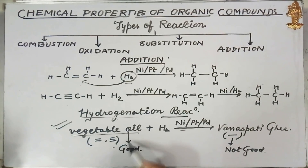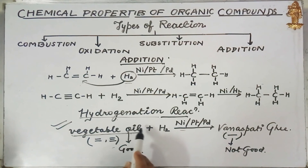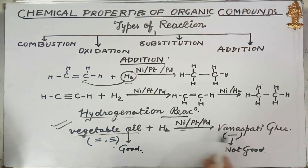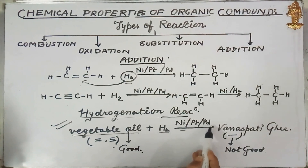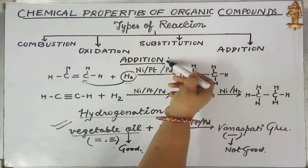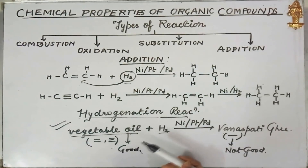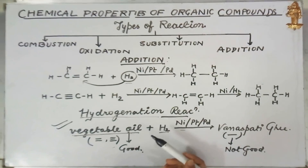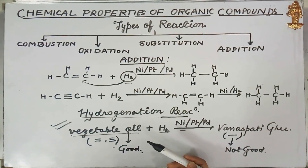Vegetable oil is good for health, whereas vanaspati ghee is not. Vegetable oil can be easily converted into vanaspati ghee by adding hydrogen to it in the presence of nickel, platinum, and palladium. This is all about hydrogenation reaction, a type of addition reaction. I hope we have covered all the types of reactions given by organic compounds, and it will be helpful for you for the examination. Thank you.